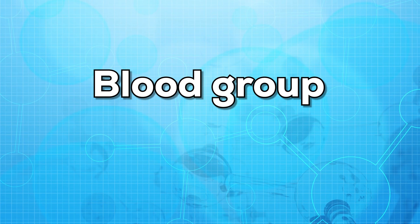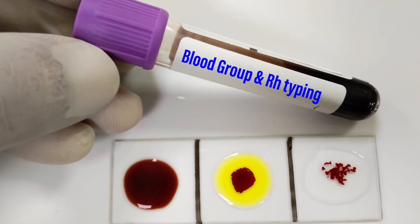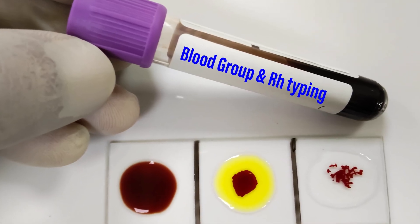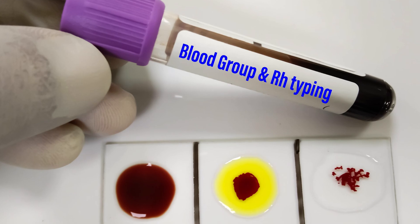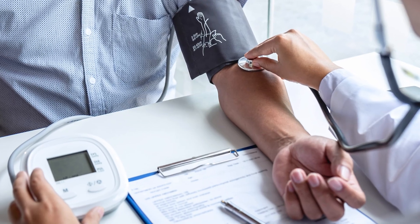The next test is blood group. It is very important to check the blood group so as to avoid a condition known as RH incompatibility. If RH incompatibility is diagnosed, then immediate treatment must be taken.